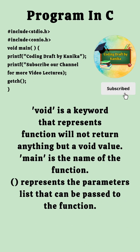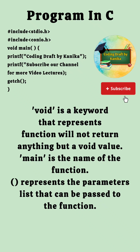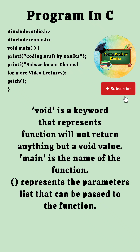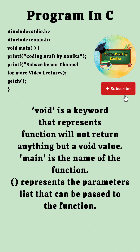void is a keyword that represents the function will not return anything but a void value. main is the name of our function. Parenthesis represents the parameters list that can be passed to the function. But in this program, we have not passed any parameters.